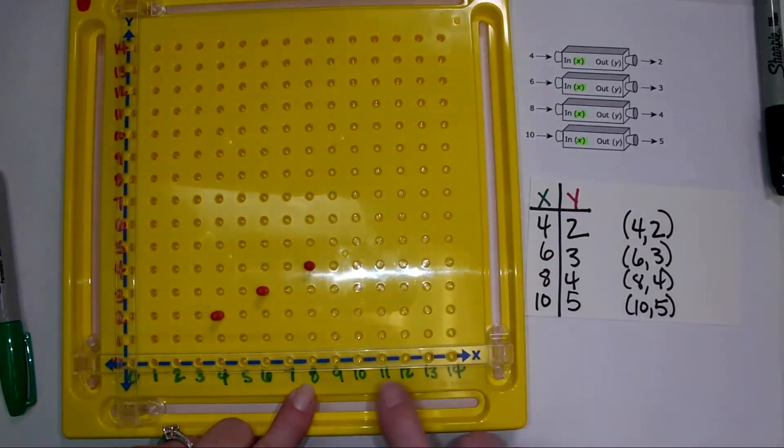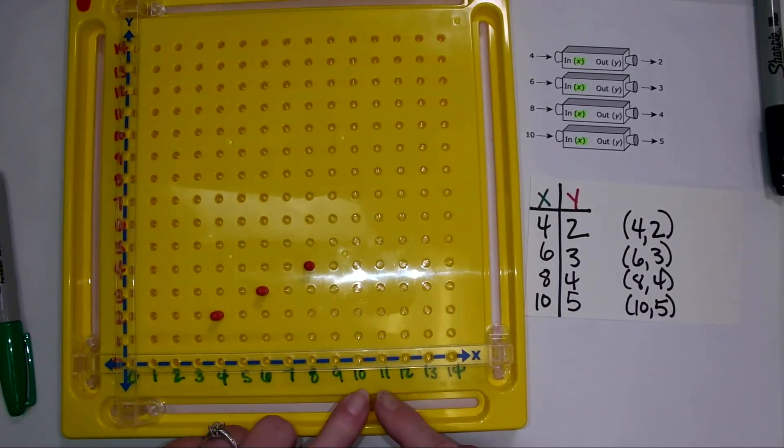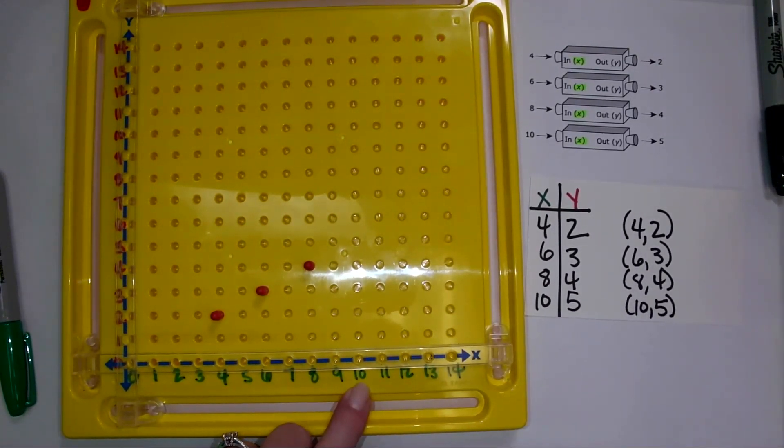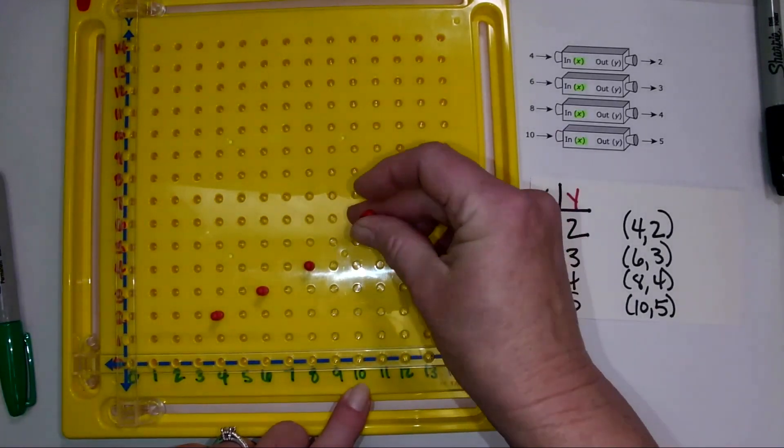And then I have 10, 5. And so I have 10 on my x axis. And I'm going to go up 5, 1, 2, 3, 4, 5.